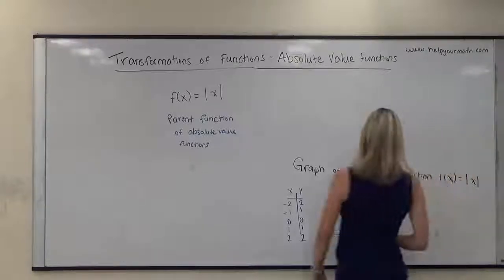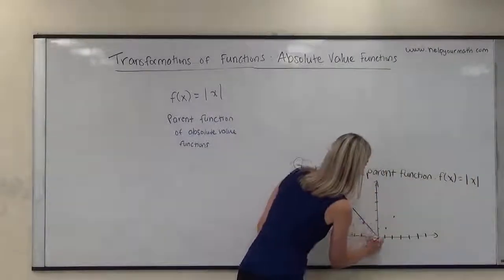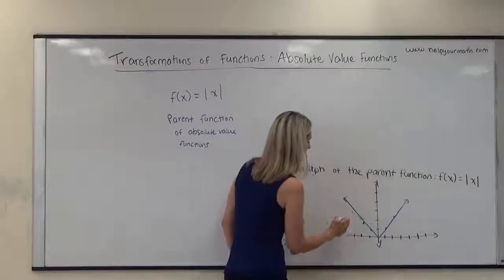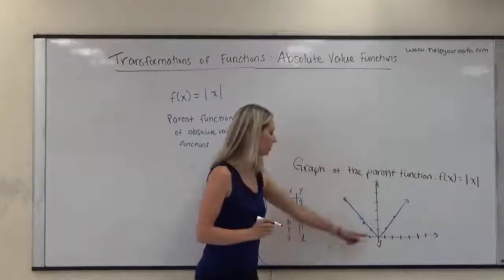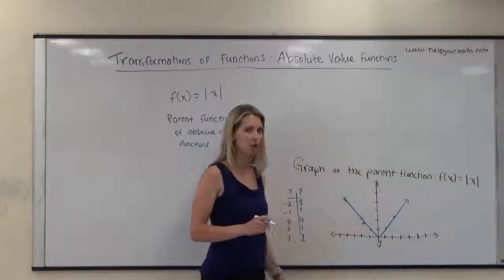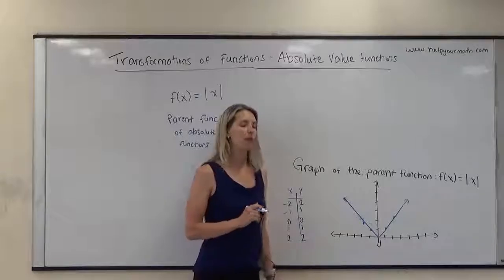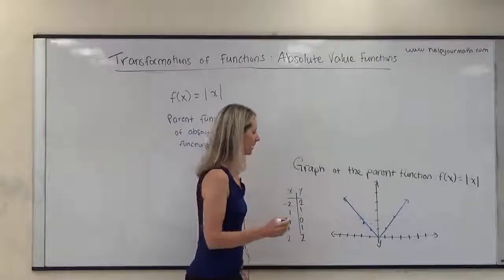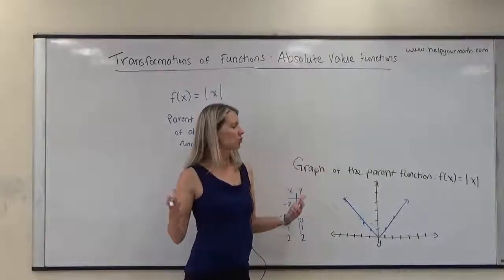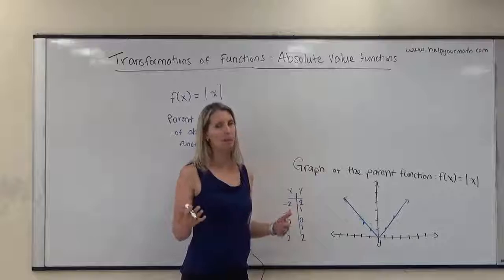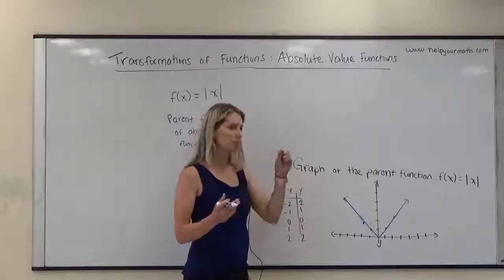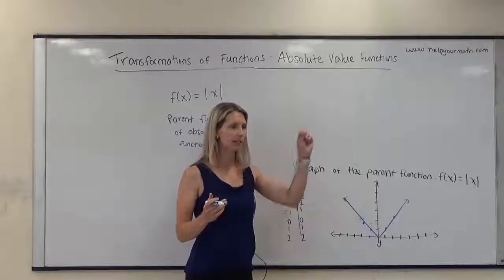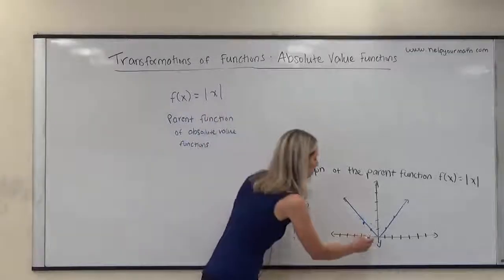So this particular function looks like the letter V. It has a sharp point at the origin at (0, 0). I sometimes refer to that particular point as the vertex. When looking at transformations of absolute value functions, I usually identify the vertex and see where it's moving in the coordinate plane.